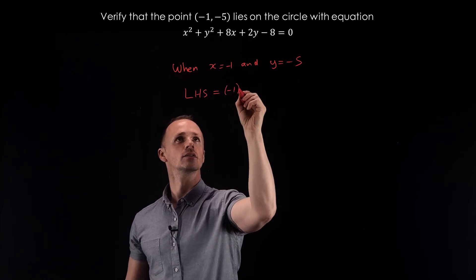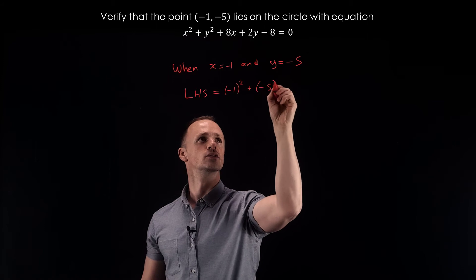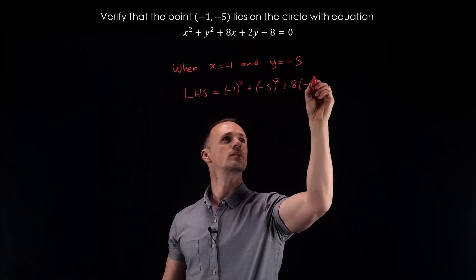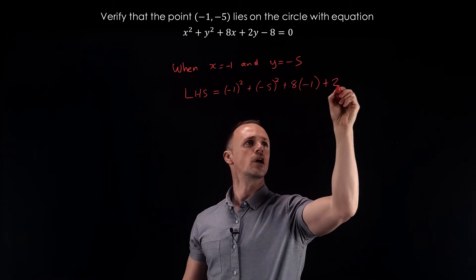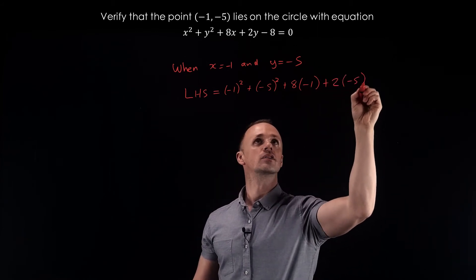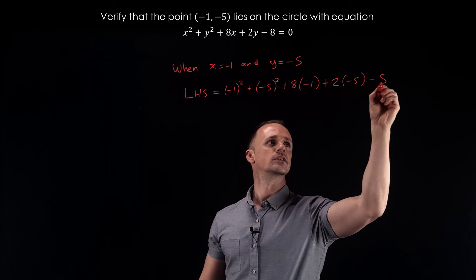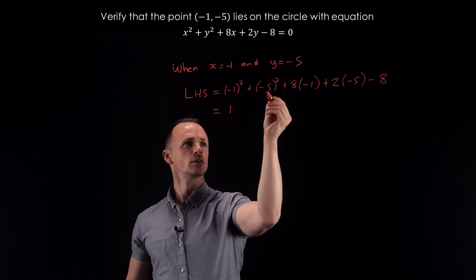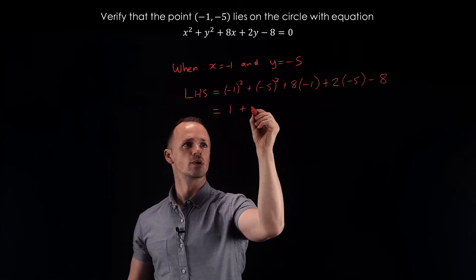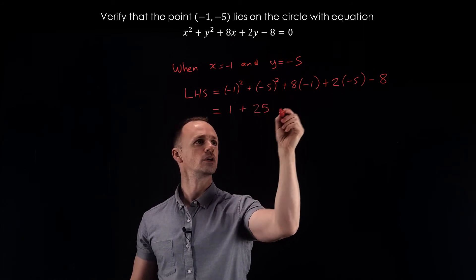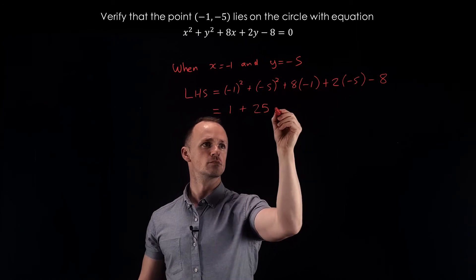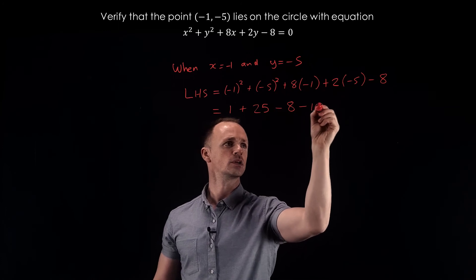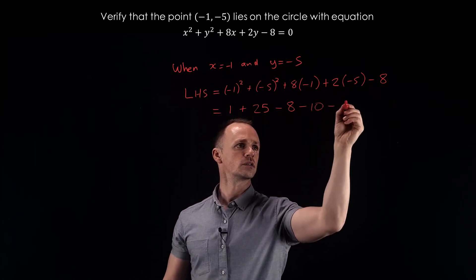...(-1) squared plus (-5) squared plus 8 lots of negative one plus 2 lots of negative five, minus 8. Simplifying: (-1) squared is 1, (-5) squared is 25, 8 times minus one is minus 8, 2 times minus five is minus 10, and then minus 8.